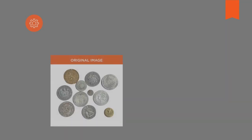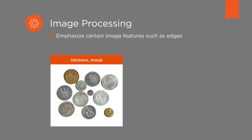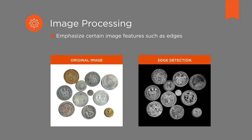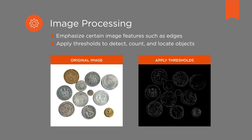Now it's time for image processing to extract the required information from the image. The first step is to emphasize certain image features such as edges or to apply thresholds. This makes it easier to detect, count and locate objects on the image. Sometimes it is also necessary to measure object dimensions and distances or image areas precisely.